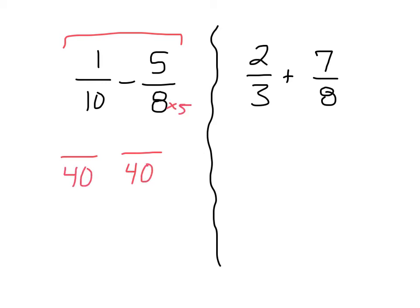8 times 5 is 40, so I have to do the same thing to the numerator. 5 times 5 is 25. 10 times 4 is 40, so I have to do the same thing to the numerator. 1 times 4 is 4. So this is kind of a hard one, because now what am I dealing with? They're both over 40, but all I'm really concerned with is 4 minus 25. I have to subtract the numerators.